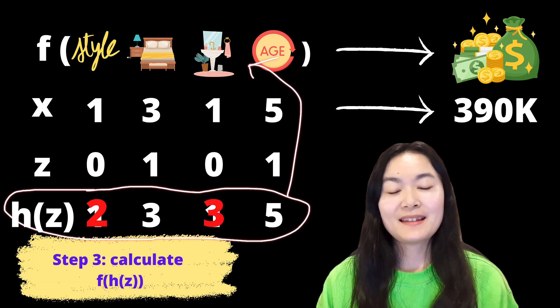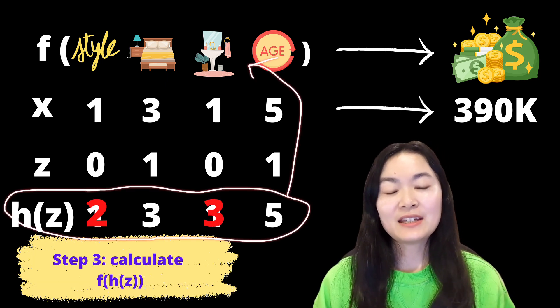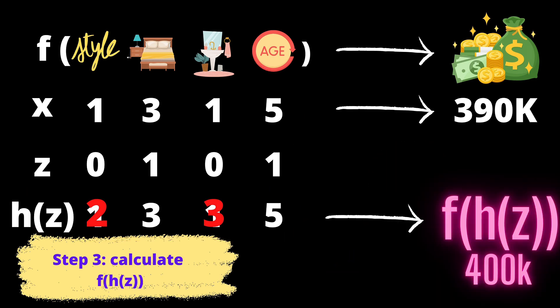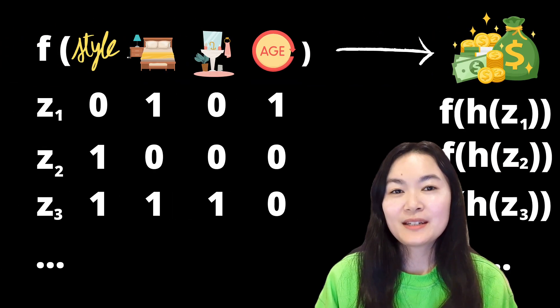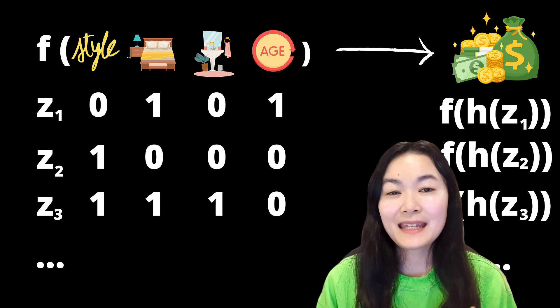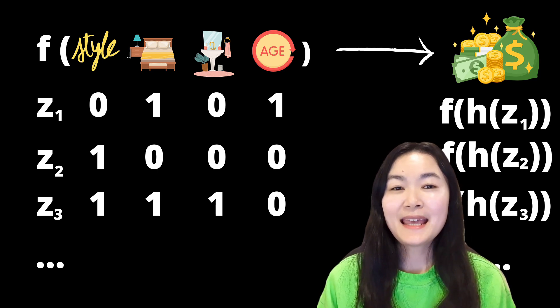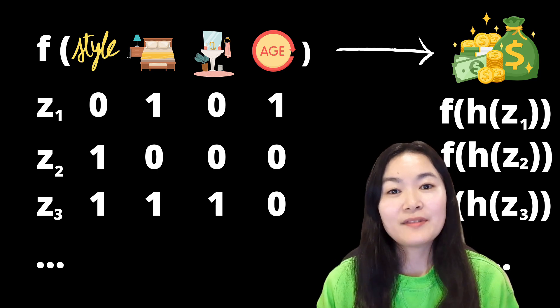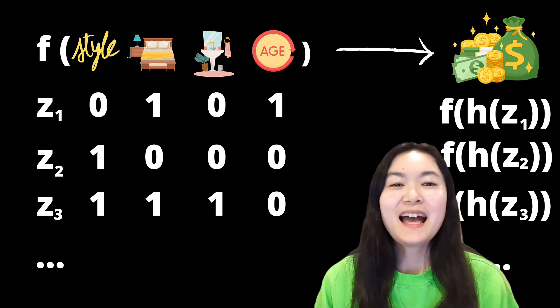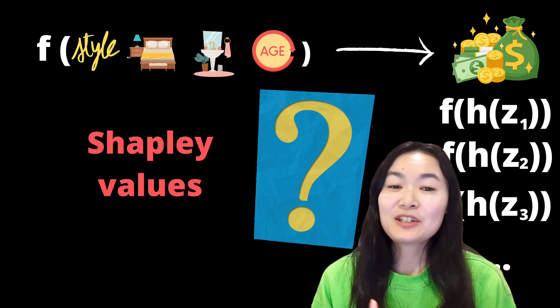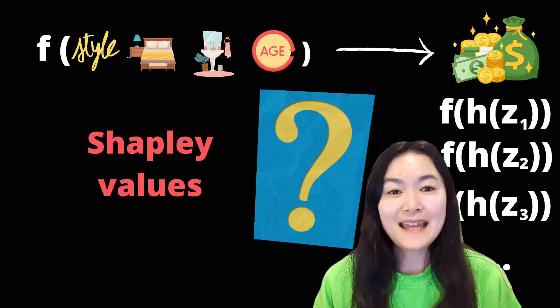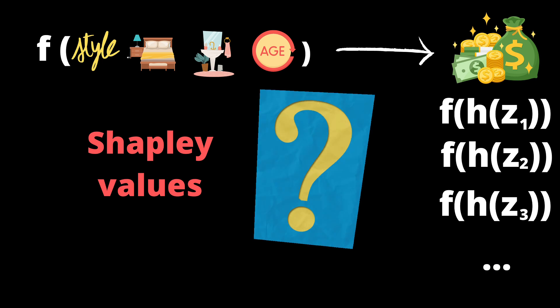Step 3 is to input HZ into our machine learning model, the function F, and to get an output which is F(HZ). For example, it could be 400k. Following the same steps, we could sample the coalition Z many, many times, and we will get the values of F(HZ) many times. Our goal is to approximate the Shapley values from those values.